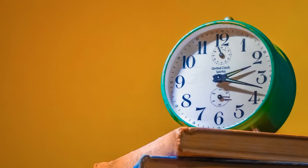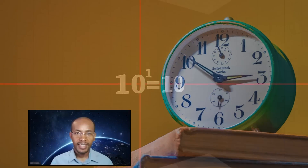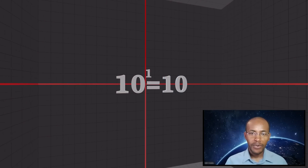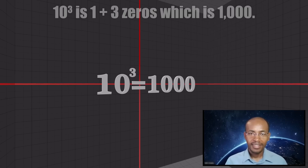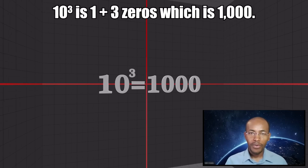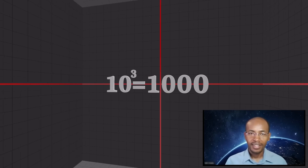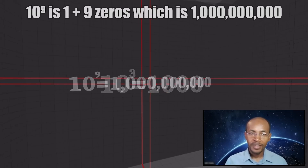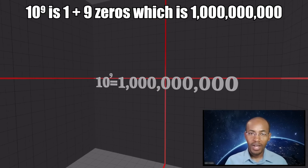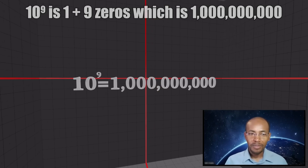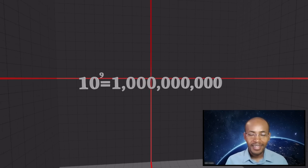First, let's introduce exponential notation. 10 to the 1st power is 1 plus 1 zero, which is 10. 10 to the 3rd power is 1 plus 3 zeros, which is 1,000. 10 to the 9th power is 1 plus 9 zeros, which is 1 billion — the dream number for everyone's bank account. So you get the idea.